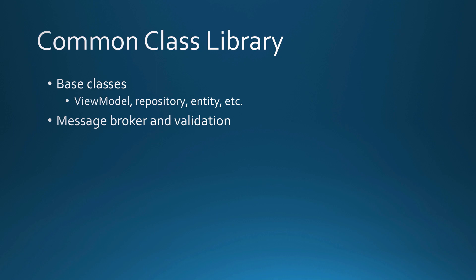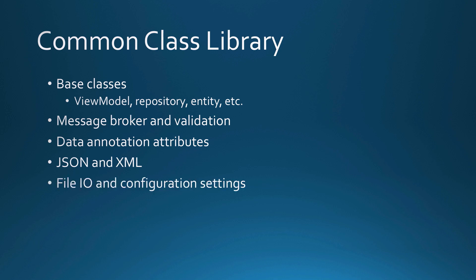You might also have some message broker and validation classes, custom data annotation attributes, classes that help you work with JSON or XML, classes for file IO — like the file system helper we developed earlier in this course — classes to help with configuration settings, cryptography, and other generic utilities. The important thing is to keep front-end technology out of this common class library. It should be pure classes with just properties and generic methods.